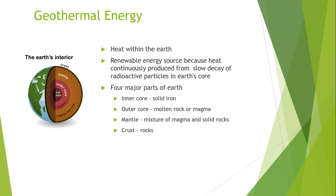The earth's outer core is a fluid layer, about 2400 kilometers or about 1500 miles thick, and is composed mainly of iron, nickel, and other metals that lie above earth's solid inner core.